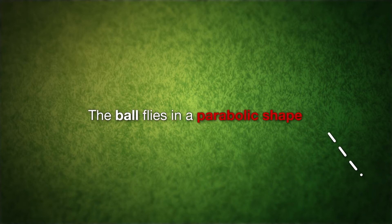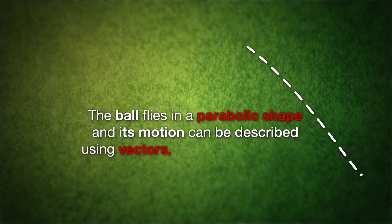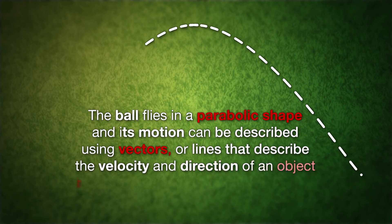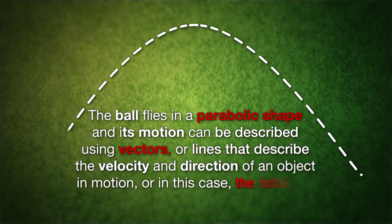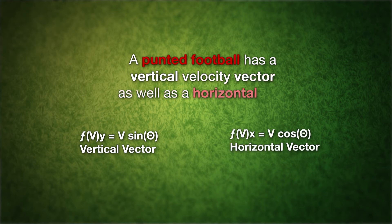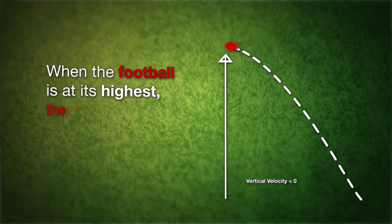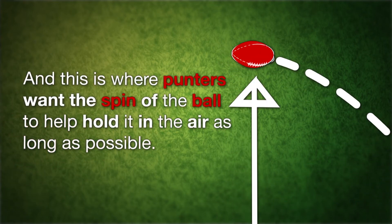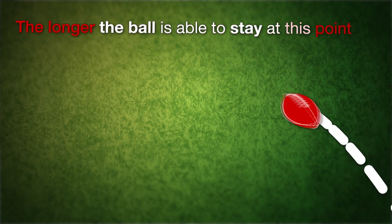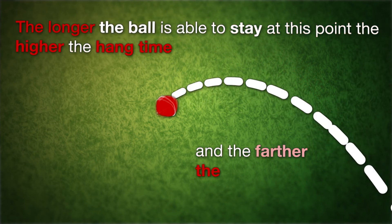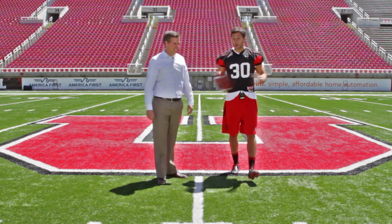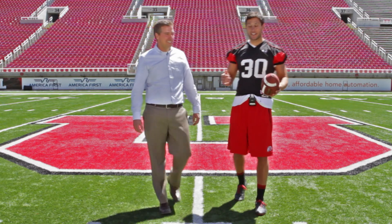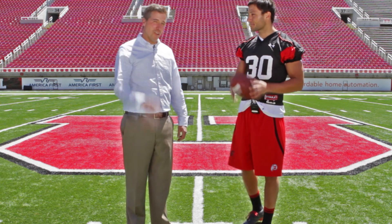The ball flies in a parabolic shape, and its motion can be described using vectors, or lines that describe the velocity and the direction of an object in motion — in this case, the football. A punted football has a vertical velocity vector as well as a horizontal one. When the football is at its highest, the vertical velocity vector is zero, and this is where punters want the spin of the ball to help hold it in the air as long as possible. The longer the ball stays at this point, the higher the hang time and the farther the ball will fly. The whole point of this is for our opponents to get a lousy field position, so we win more games.